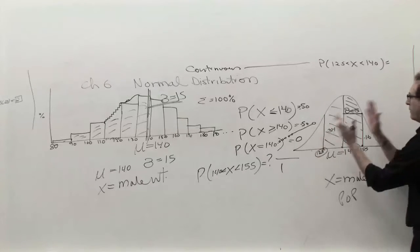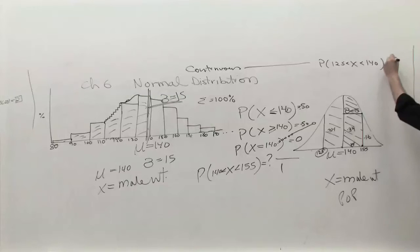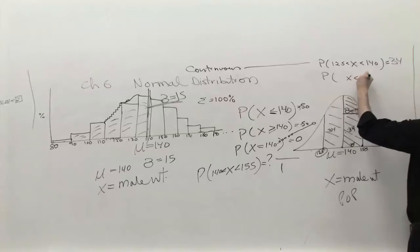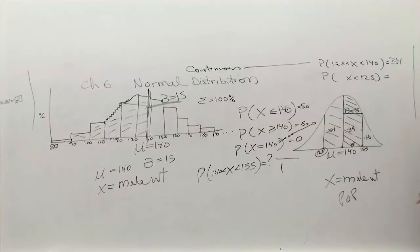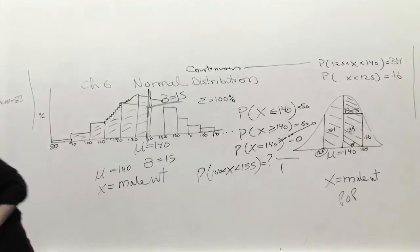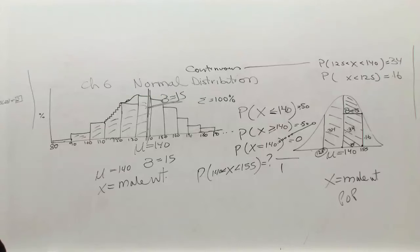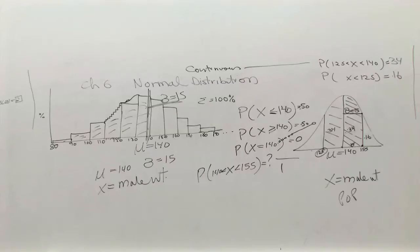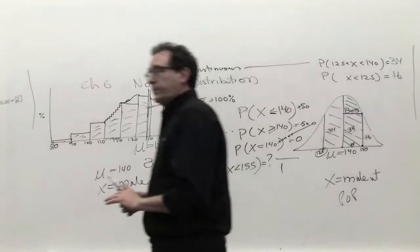By symmetry, it's got to be the same 34%. This is, you know, it's put in your images. And if I would ask you how many people weigh less than 125? Anybody else answer? Yes. Sixteen percent.